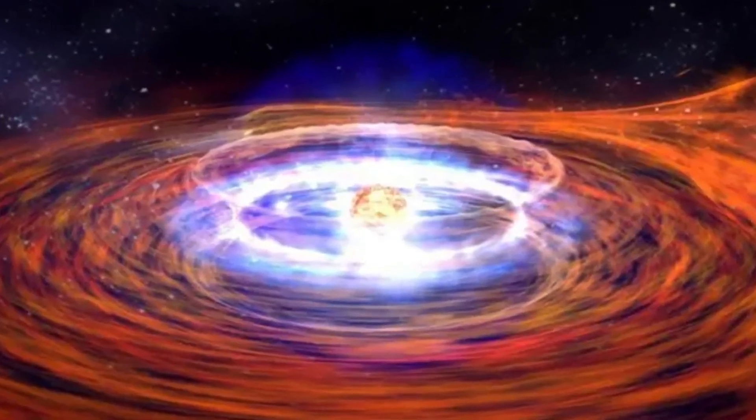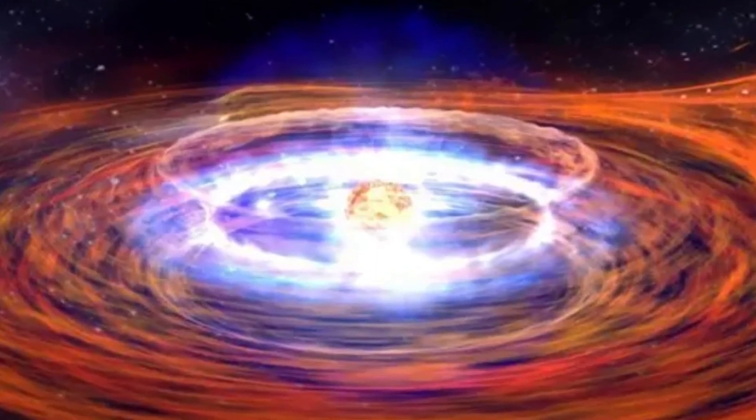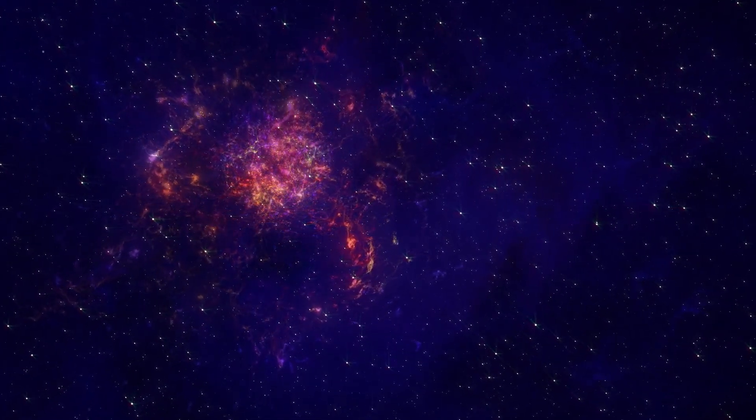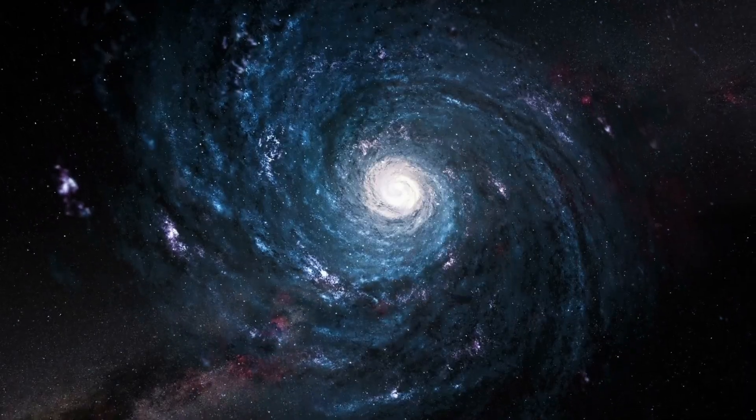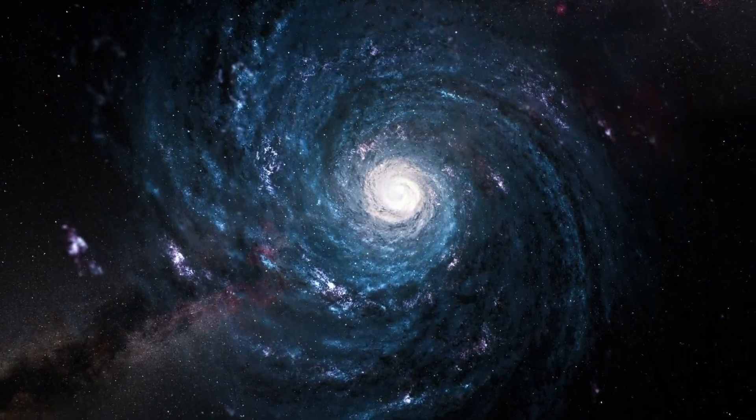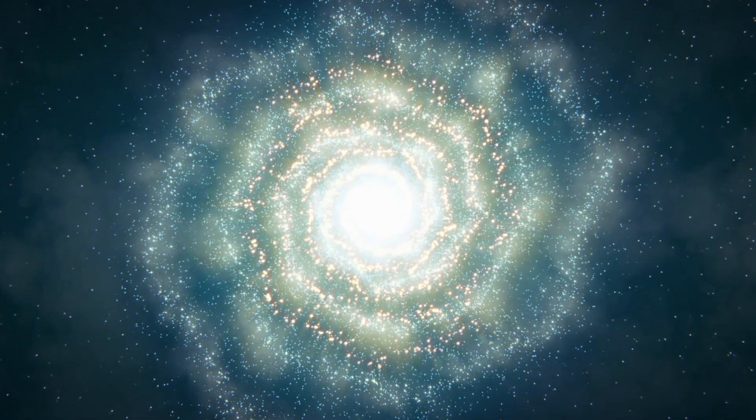Remarkably, some neutron stars collapse further to form black holes, highlighting the dual demise stars undergo in their cosmic evolution. Over millions of years, the resultant atoms disperse throughout the galaxy, some coalescing within clouds under gravitational forces to form new stars and planets, perpetuating the cosmic cycle.